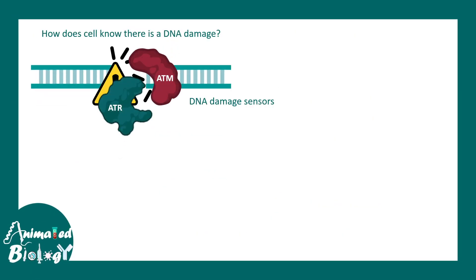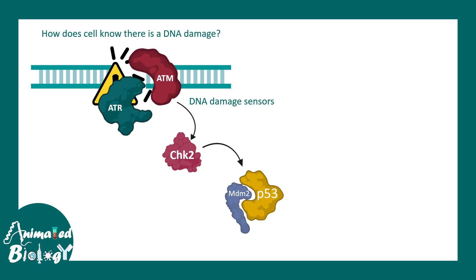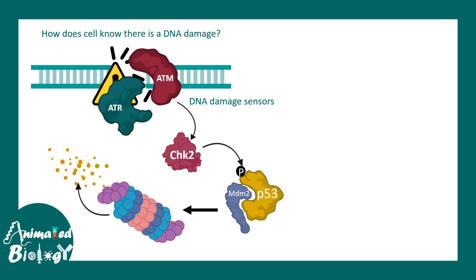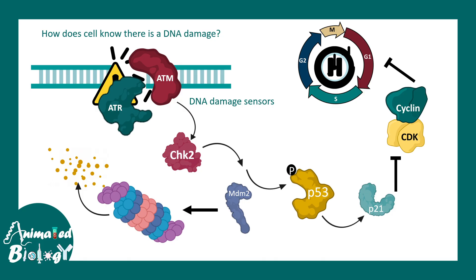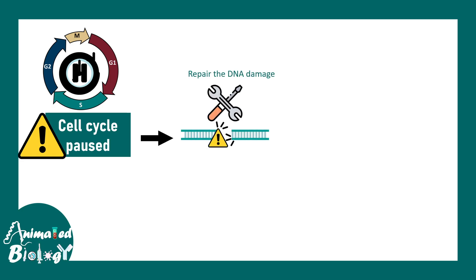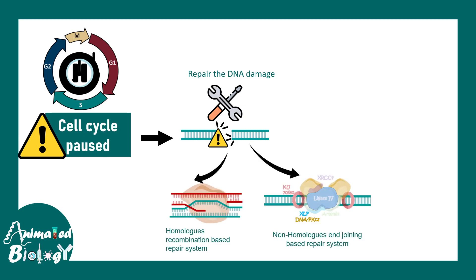Normally P53 is degraded, but when CHK2 phosphorylates P53 it becomes activated. P53 can activate P21, which is a negative regulator of cyclin-CDK activity. When P21 blocks cyclin-CDK activity, the cell cycle is paused and cannot progress further. Pausing the cell cycle is important because it gives the DNA repair machinery enough time to repair the damage — through homologous recombination or non-homologous end joining mechanisms.